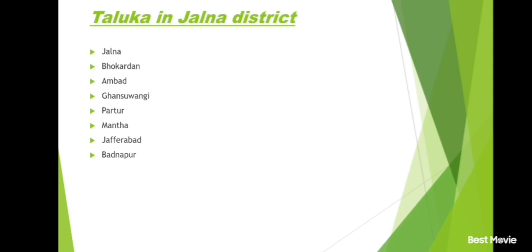Jalgaon district and its talukas: Tharangaon, Amalner, Bhadgaon, Bhusawal, Bodwad, Chalisgaon, Chopda, Erandol, Jalgaon, Jamner, Muktainagar, Pachora, Parola, Raver, Yawal.